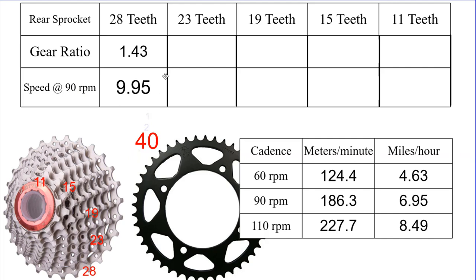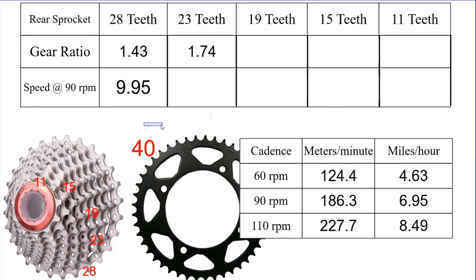Now if we multiply that scale factor times our cadence — whenever we had a one-to-one ratio of 40 to 40 at 90 RPM, our speed was 6.95 mph. So multiplying that by our new gear ratio scale factor tells us how fast we're going in our lowest gear, which is about 10 miles an hour. For 23 teeth, we do 40 divided by 23 — that's our second-lowest gear — giving us about 1.74. So for every pedal rotation, the rear tire rotates 1.74 times, and we multiply that by our baseline cadence speed to get about 12 miles an hour.